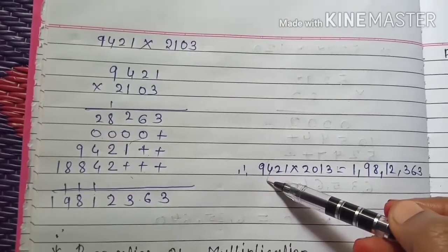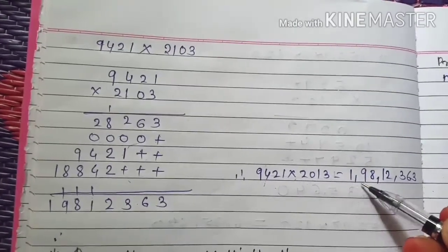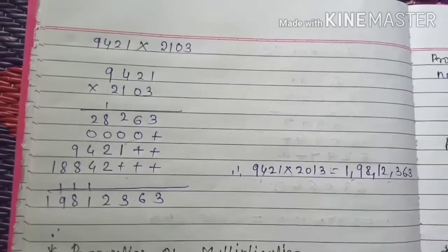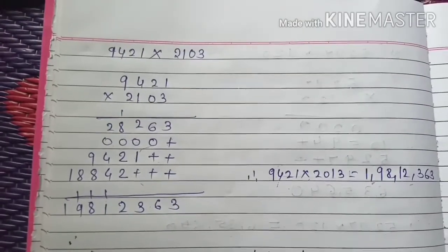So when 9421 is multiplied by 2103, we will get 1,98,12,363. I hope you understood how to multiply a number by 4-digit number.